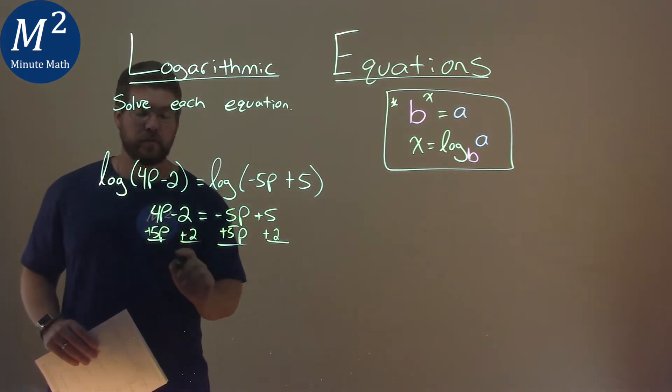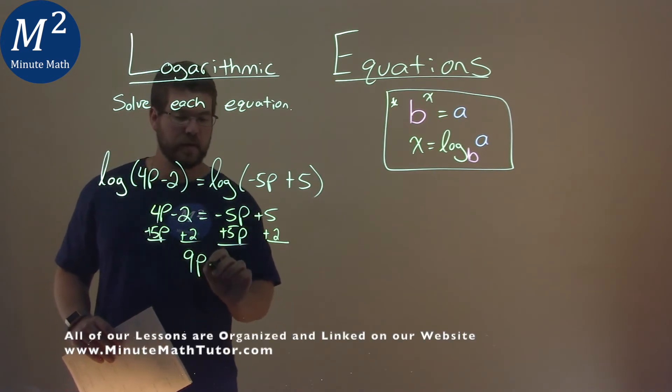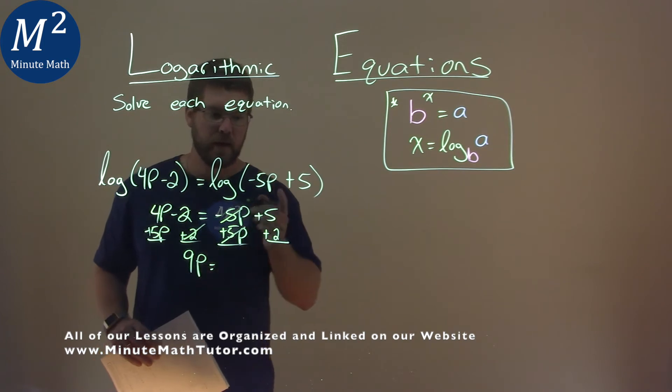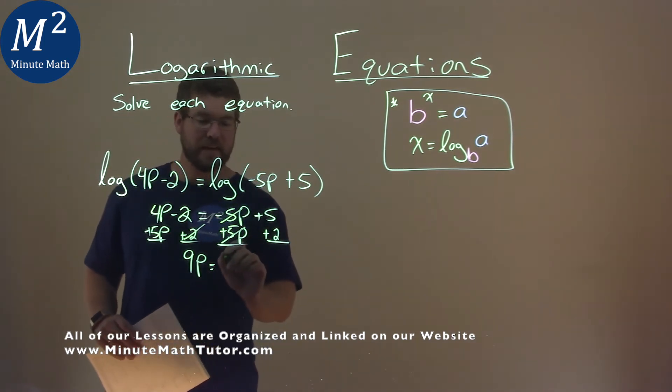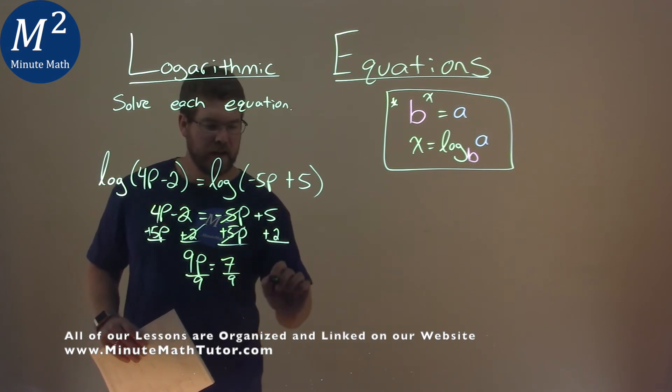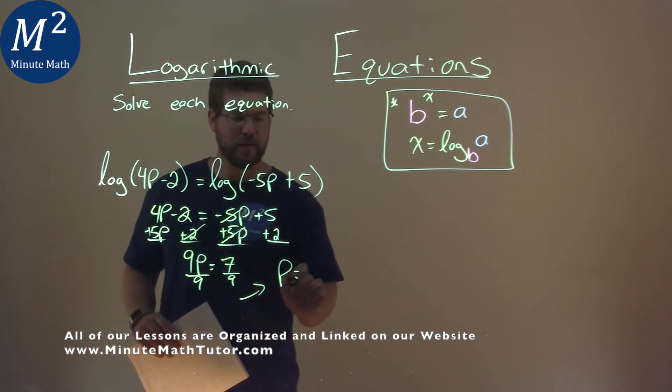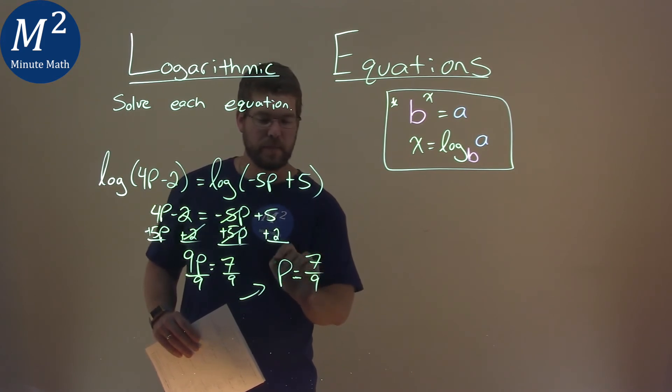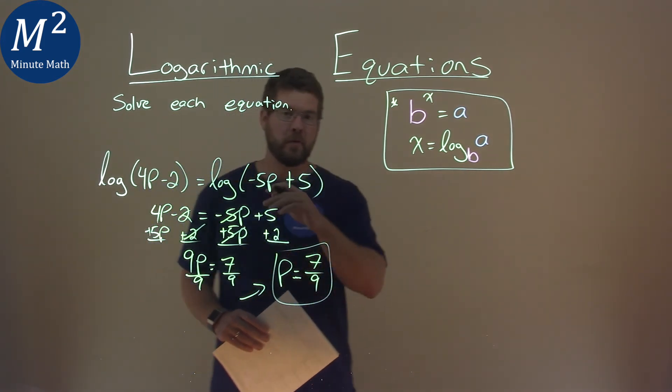What does that give us? 4p plus 5p is 9p. The 2's cancel, and these 5p's cancel. 5 plus 2 is 7. I divide both sides by 9, and I have p by itself. I'll put right here. p equals 7 over 9, and that is our final answer.